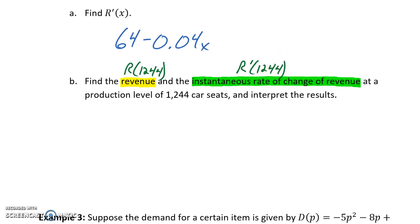So using a graphing calculator, Wolfram Alpha, we could plug in each of those functions and evaluate it for a given number here. We would get R(1,244). So that original revenue function evaluated for this number would give us a result of 48,665.